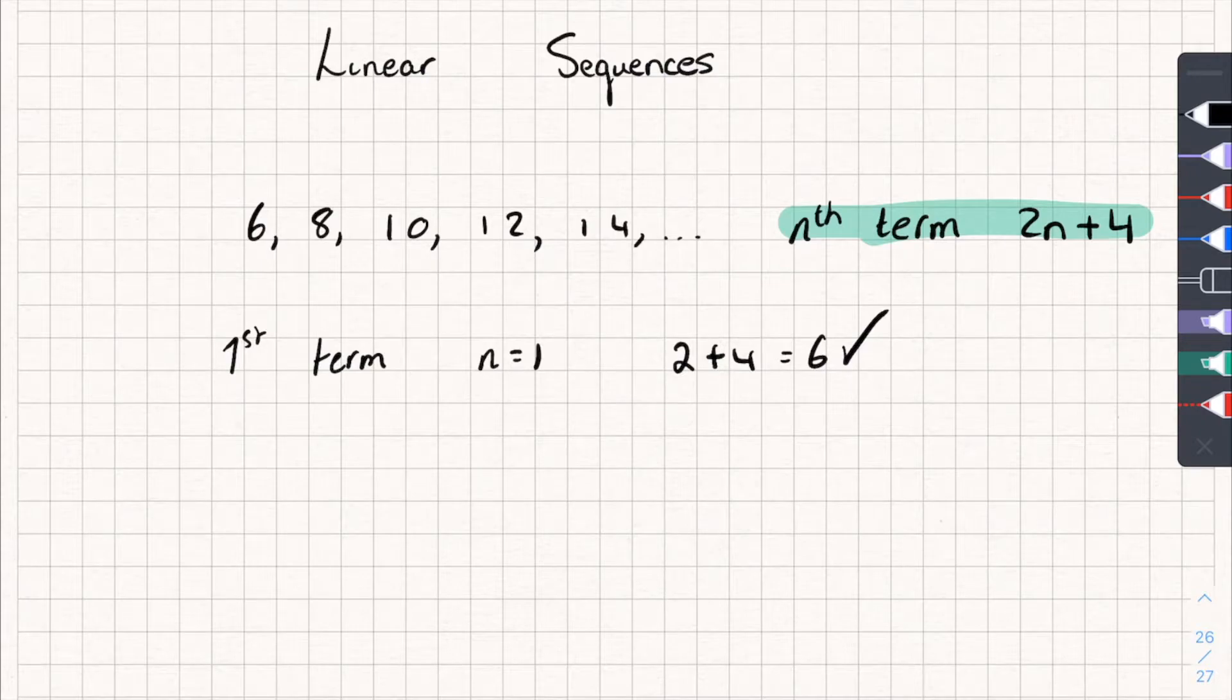If I wanted the third term, I would let n equal 3, and do 2 times 3, which is 6, plus 4, and get 10, which you can see, that works. If I wanted the thousandth term, then I would just say, let n equal 1,000, well 2 times 1,000 is 2,000, plus 4 is 2,004. So you can see why the nth term might be useful.